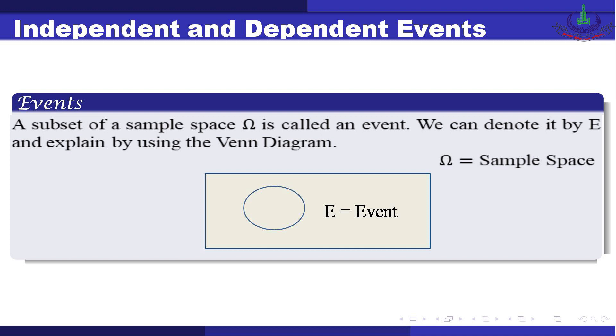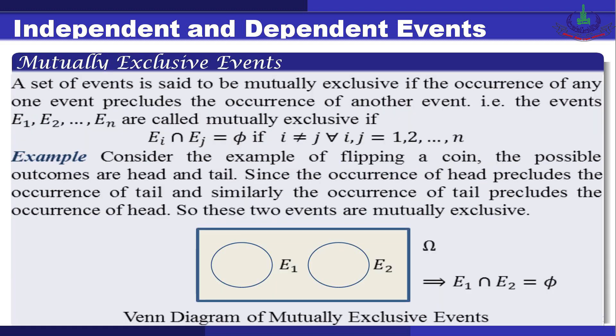A subset of a sample space omega is called an event, denoted by E, represented with a Venn diagram as a circle inside the rectangle of omega. A set of events is said to be mutually exclusive if the occurrence of any one event precludes the occurrence of another. Events E1, E2, ..., En are mutually exclusive if E_i intersection E_j is empty for all i ≠ j.